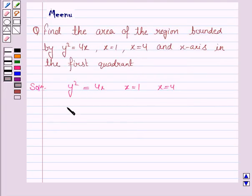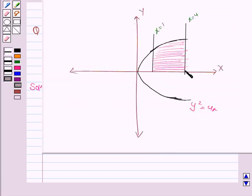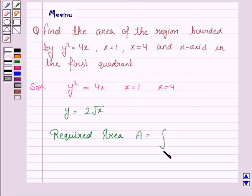Now y² = 4x, so this implies y = 2√x. The required area, denoted by A, is given by the integral from 1 to 4, because x is going from 1 to 4.